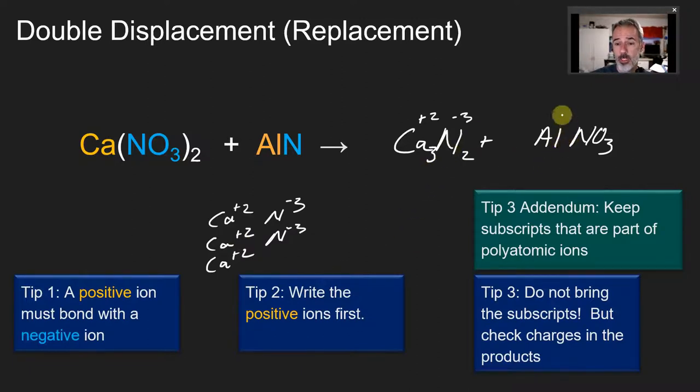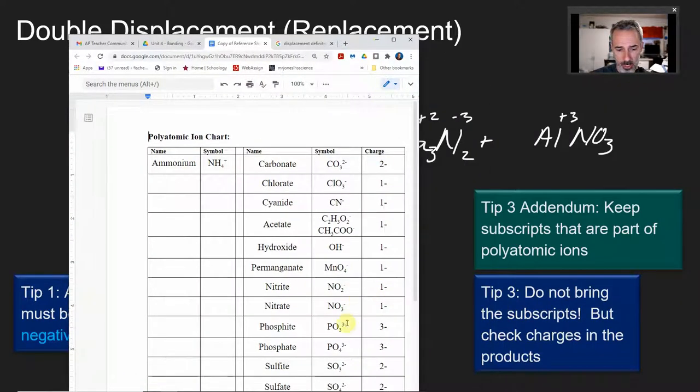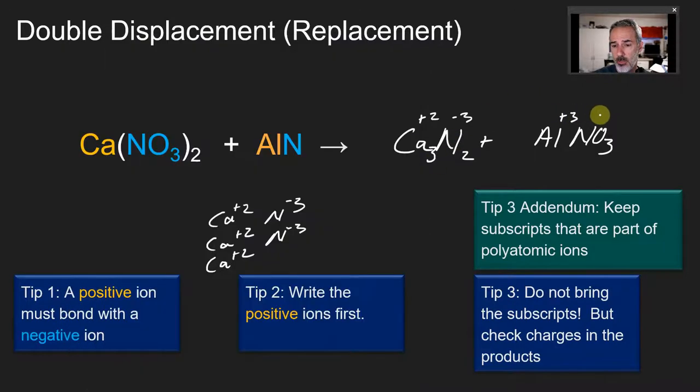Over here, to check this one, I know aluminum's plus three. I'm going to have to go to the polyatomic ion chart to see nitrate. Nitrate is right there, negative one. So do we need more aluminums or nitrates? Definitely nitrates, it's going to take three. If we want three of these, we've got to put parentheses and put a three. You can see we did not keep the two because the two was from checking charges with calcium. Here we're checking charges with aluminum, so it's going to have a different subscript.